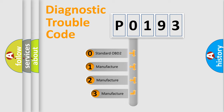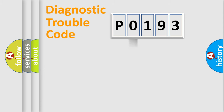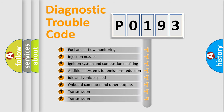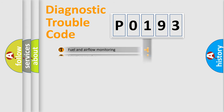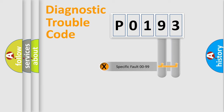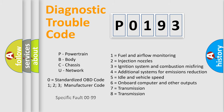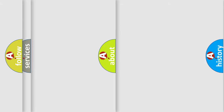If the second character is expressed as 0, it is a standardized error. In the case of numbers 1, 2, or 3, it is a more specific expression of a car-specific error. The third character specifies a subset of errors. This distribution is valid only for the standardized DTC code, where the second character is expressed by the number 0. Only the last two characters define the specific fault of the group.